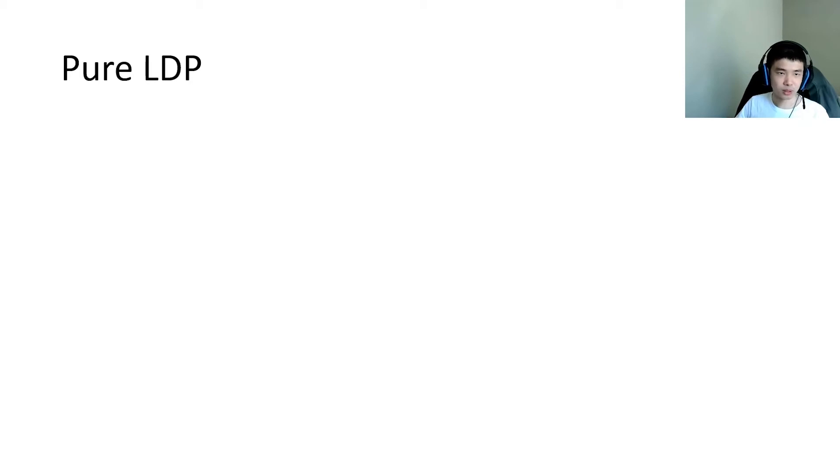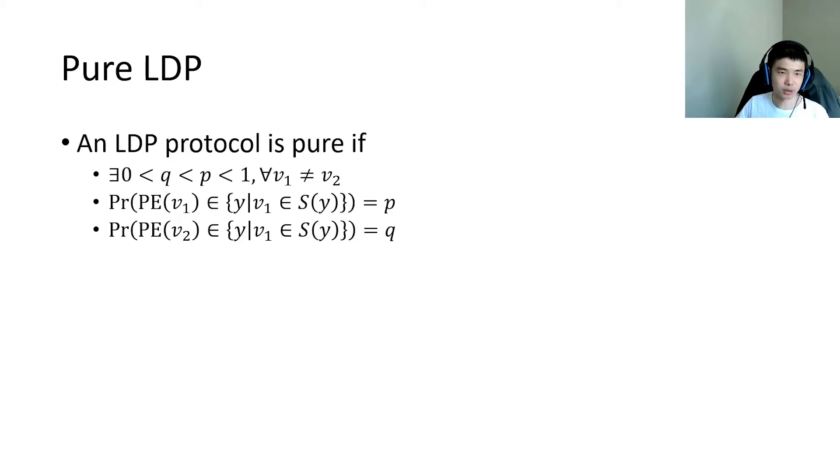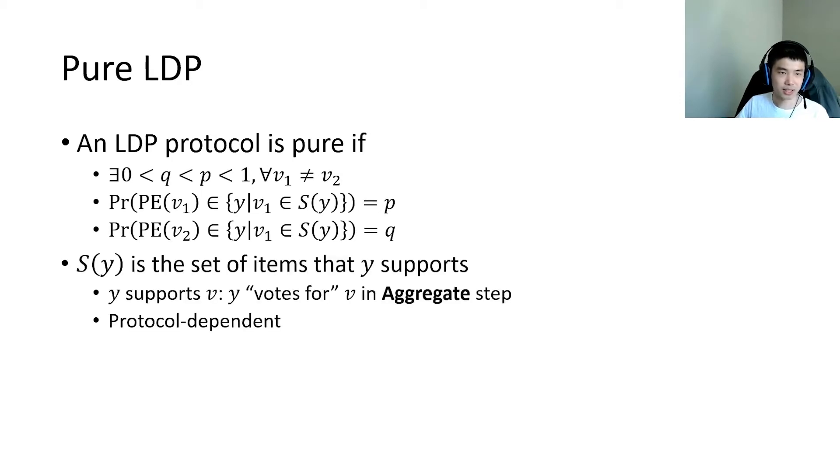In this work, we focus on pure LDP protocols proposed in previous works. Specifically, an LDP protocol is pure if there exist two probabilities p and q that satisfy the following equations. In the equation, S(y) is the set of items that y supports. We say y supports v if, in the aggregate step, the perturbed encoded value y votes for v when estimating the frequency of v.